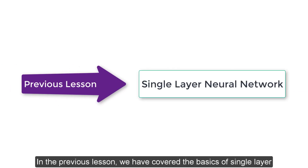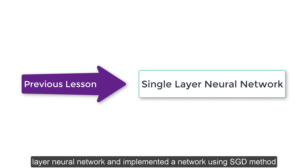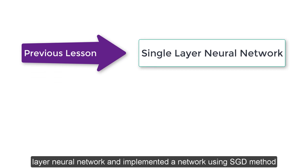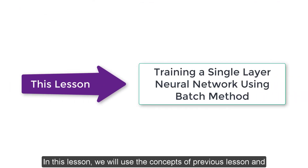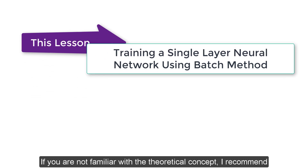In the previous lesson, we covered the basics of single layer neural network and implemented a network using the SGD method. In this lesson, we will use the concepts of the previous lesson and train a single layer neural network using the batch method.